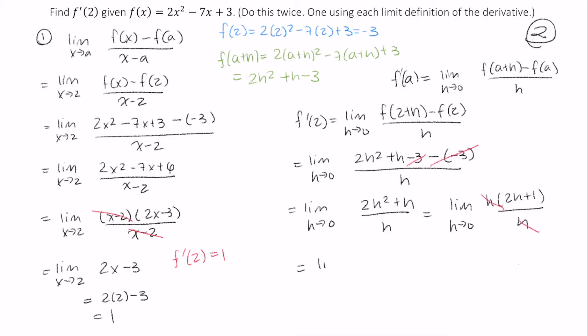So I end up with the limit as h approaches 0 of 2h plus 1, and that's just 2 times 0 plus 1, or 1. Both methods gave us the same value: the derivative of this function at x equals 2 is equal to 1. This tells us that the slope of the tangent line to f at the value 2 is equal to 1.